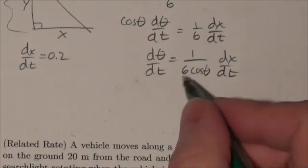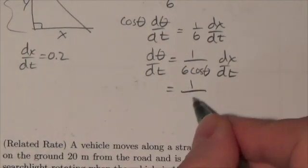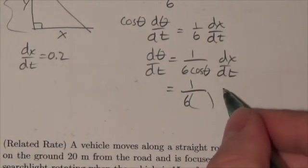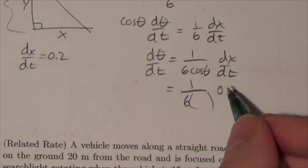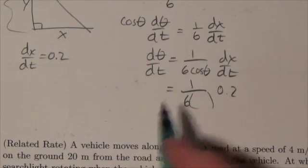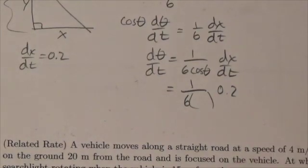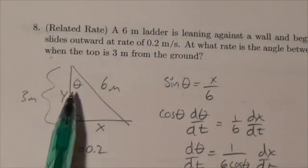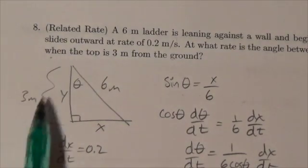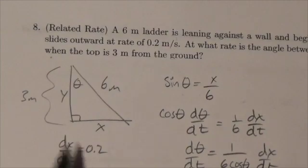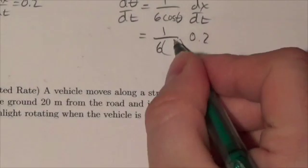Okay, now I just need to evaluate this. This is going to be 1 over 6. I'll deal with the cosine in just a second. The dx/dt is going to be 0.2. Now the really nice thing is I already know what cosine of theta is. I don't even have to figure out what the angle is because the cosine is the adjacent side over the hypotenuse, so that's 3 over 6, which becomes 1 over 2.